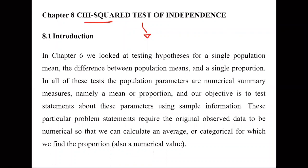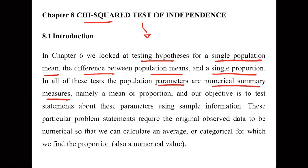In Chapter 6, we looked at testing hypotheses for a single population mean, the difference between population means, and for a single proportion. In all these tests, the population parameters were numerical summary measures — namely a mean or a proportion — and our objective was to test statements about these parameters using sample information.